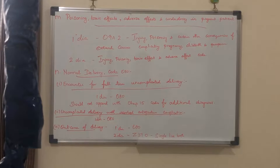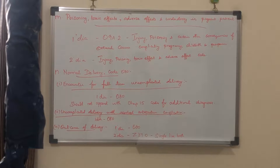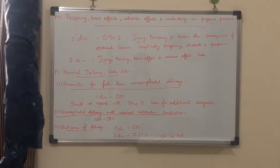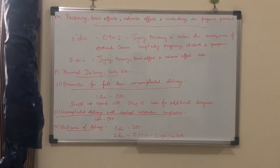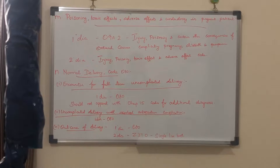The next topic is poisoning, toxic effect, adverse effect and underdosing in a pregnant patient — meaning any drug which causes allergy, is taken in overdose, or taken in underdose. In those cases, the principal diagnosis is O98.2, injury, poisoning and certain other consequences of external causes complicating pregnancy, childbirth and puerperium. The secondary diagnosis is the injury, poisoning, toxic effect and adverse effect code.